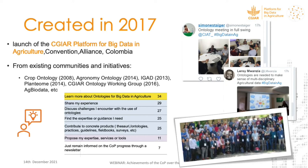It builds on existing initiatives like crop ontology, agronomy, IGAD, Planteum, and the CGI ontology working group. The members expressed in a survey their expectations about learning more about ontology, sharing challenges they encounter in the use of ontologies, finding proper expertise or guidance, and contributing to concrete products.